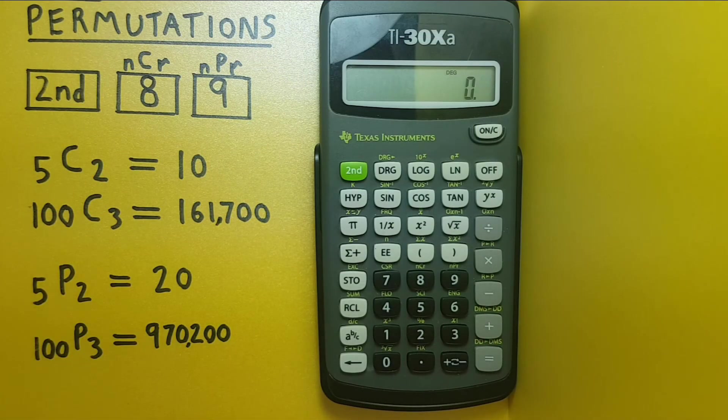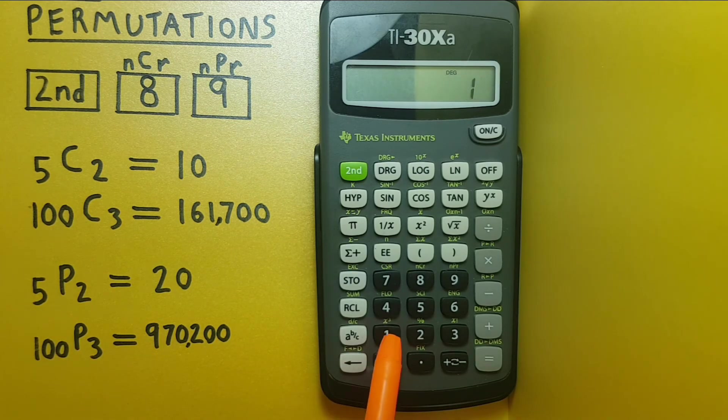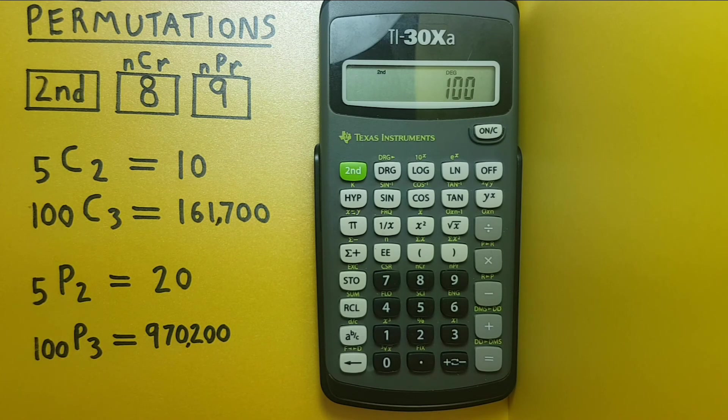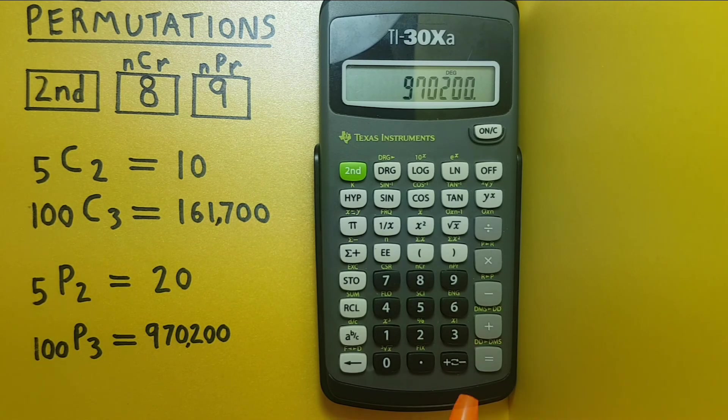Let's try a bigger number. Let's see how many different permutations choosing three from 100 we can get. We enter 100, second function, nine, and then three equals, and this gives us 970,200.